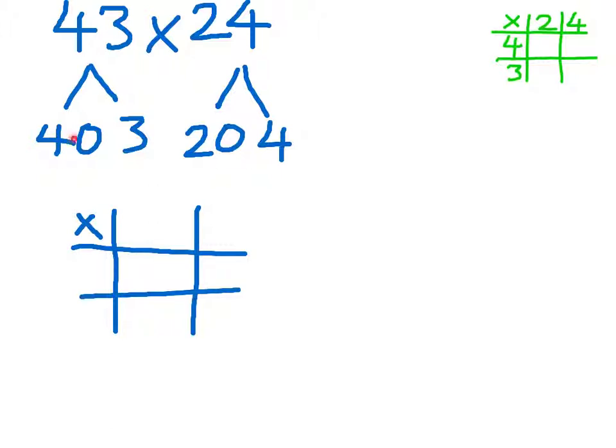I then simply have to transfer my partition numbers into the outside of the grid. So 43, 40 goes here and 3 into this row. And we'll put 24 along the top. So 20 here and 4 here.